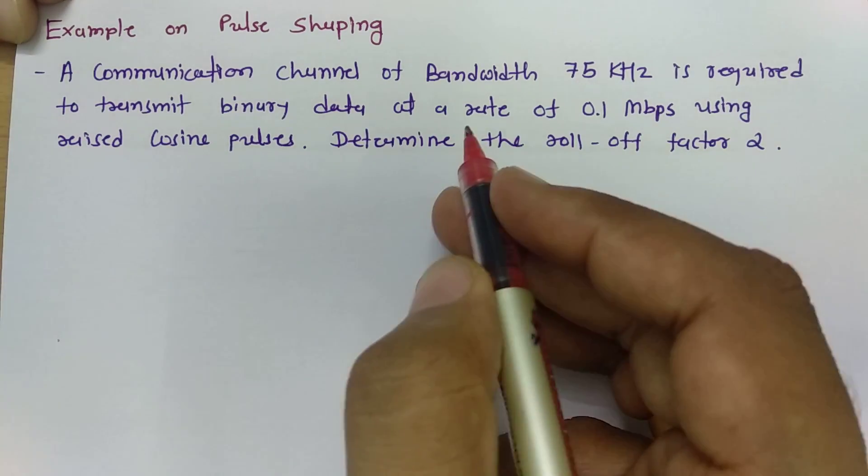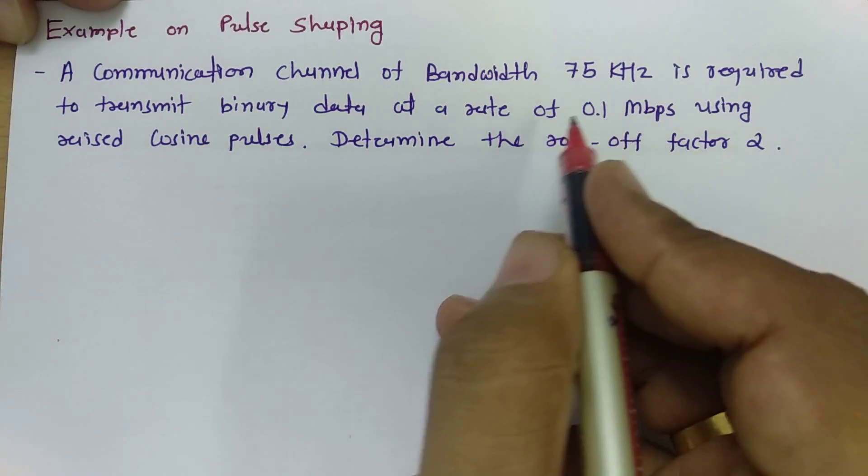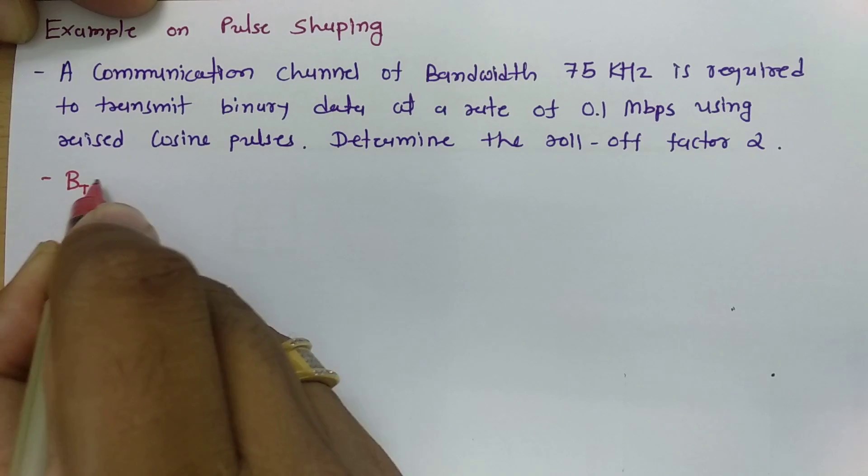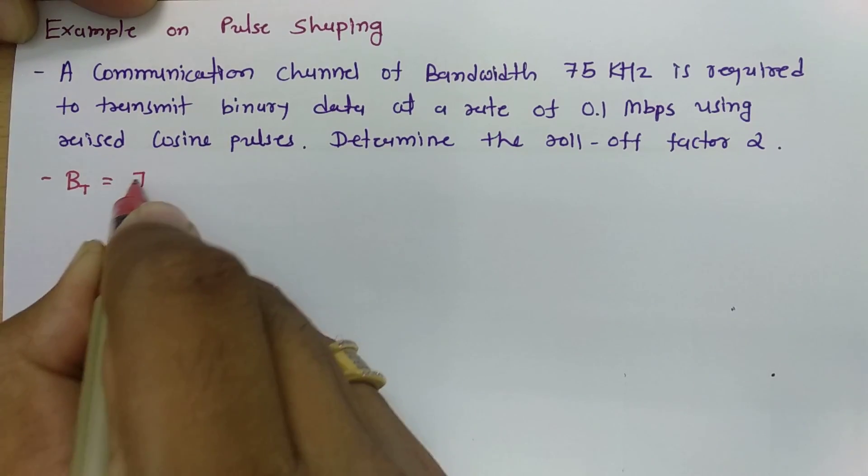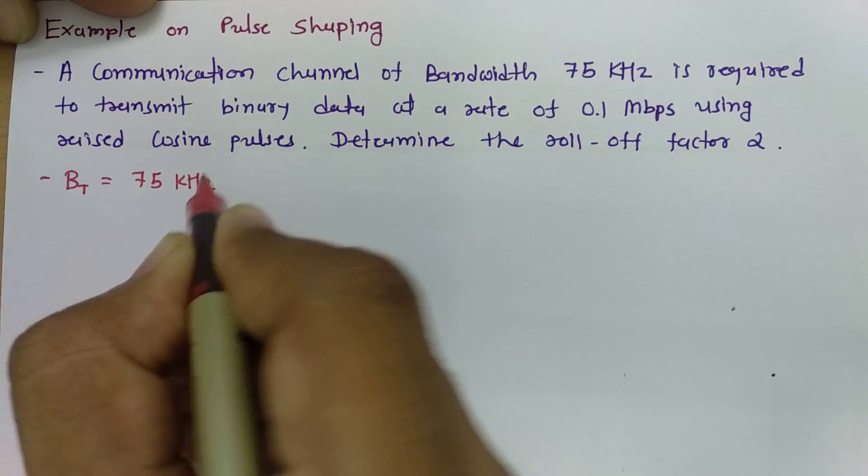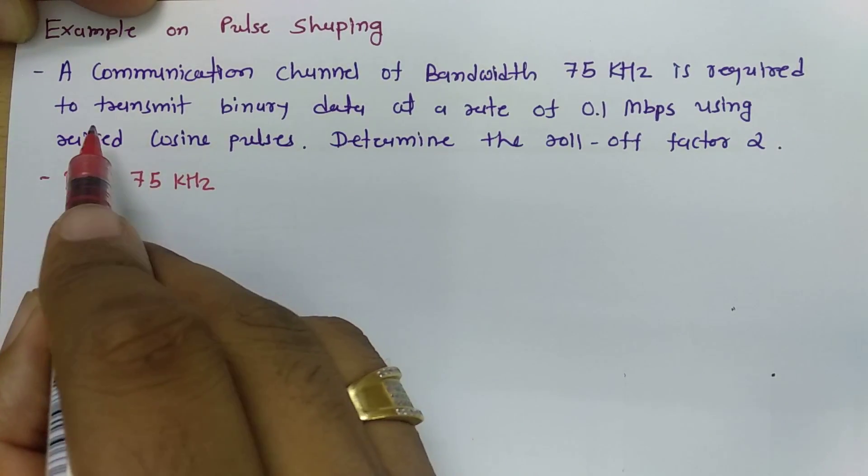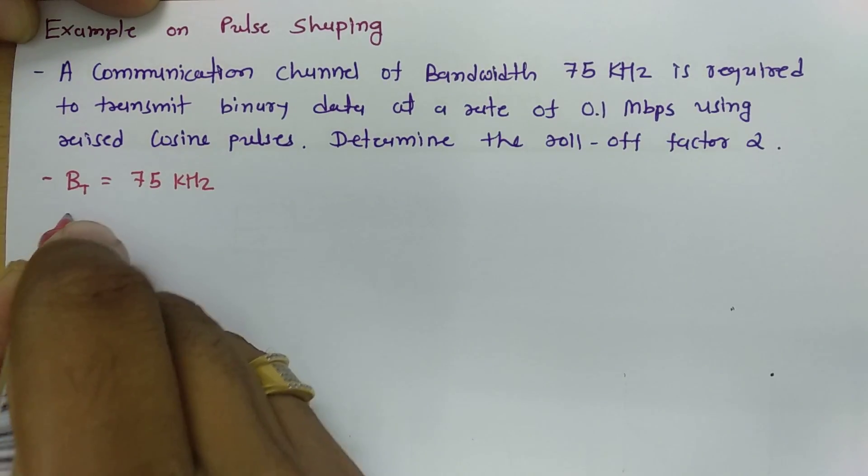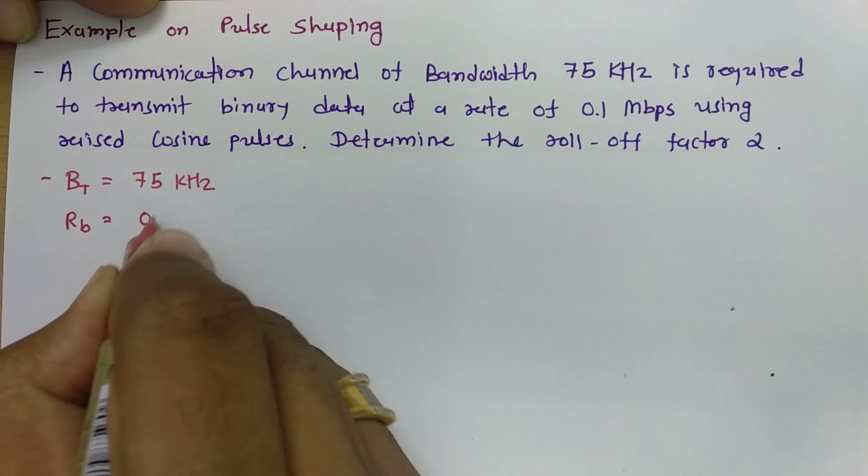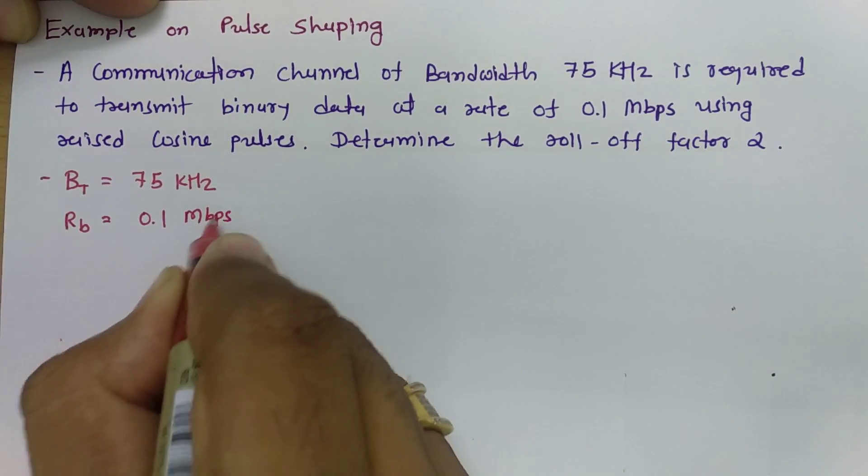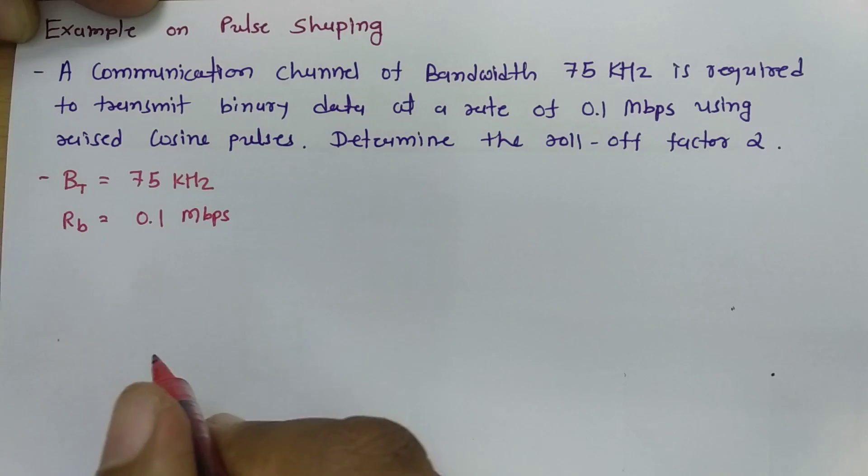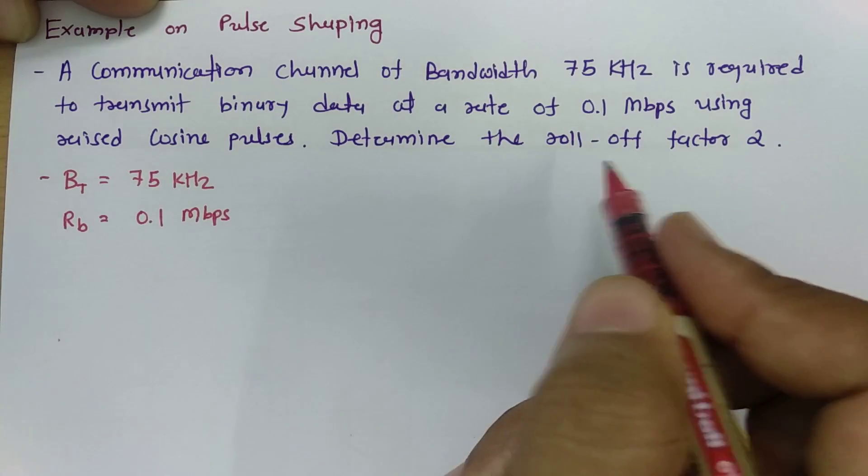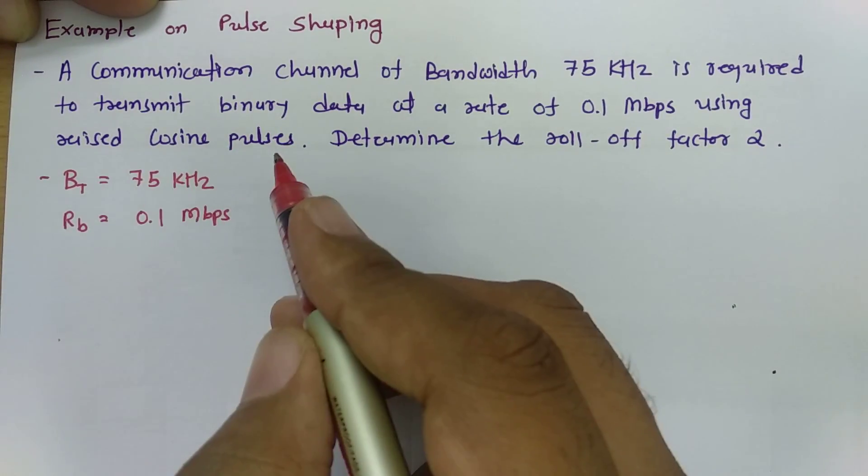So let us mention first what are the data which is given to us, then we will solve this problem. So here bandwidth BT is given by 75 kilohertz and the data rate RB is given as 0.1 Mbps. So this is the data rate which is given to us and based on this information we need to identify the roll-off factor alpha for raised cosine pulses.